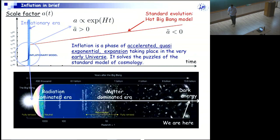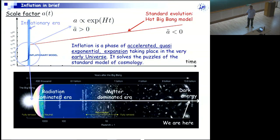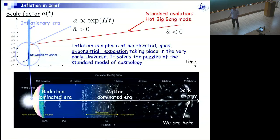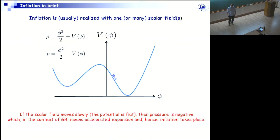It's interesting to consider this phase of evolution — inflation — because it allows you to solve some problems of the hot Big Bang phase. The hot Big Bang model is a very successful model; you can explain many astrophysical observations with it. But nevertheless it has issues, and all these issues can be fixed by postulating that there was a phase of inflation in the early universe.